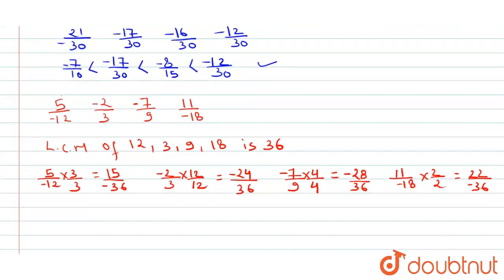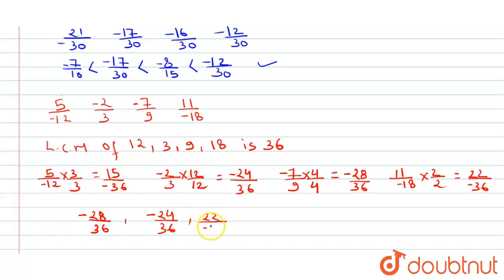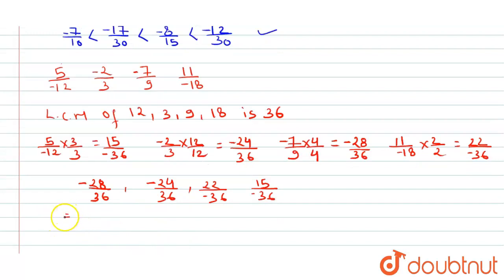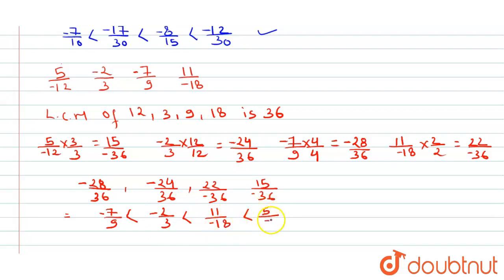Since all numbers are negative, we write the larger absolute value first (as it is the smallest number): -28/36, then -24/36, then 22/(-36), then 15/(-36). Replacing with original numbers: -7/9 < -2/3 < 11/(-18) < 5/(-12). That is our answer for the third question.